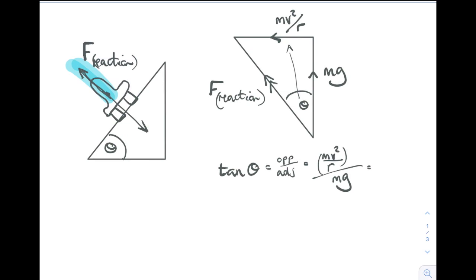I like separating these two out. So it's mv² over r times 1 over mg. That allows us to cancel out the m's and gather the terms. So tan theta is v² on the top line and gr on the bottom line.